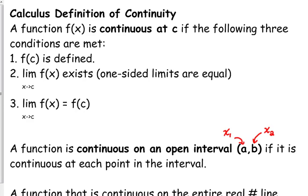Condition number two. The limit as you approach that c value exists, which requires your one-sided limits to be equal. So, approaching it from the left side and approaching it from the right side, you've got to be headed to the same value.